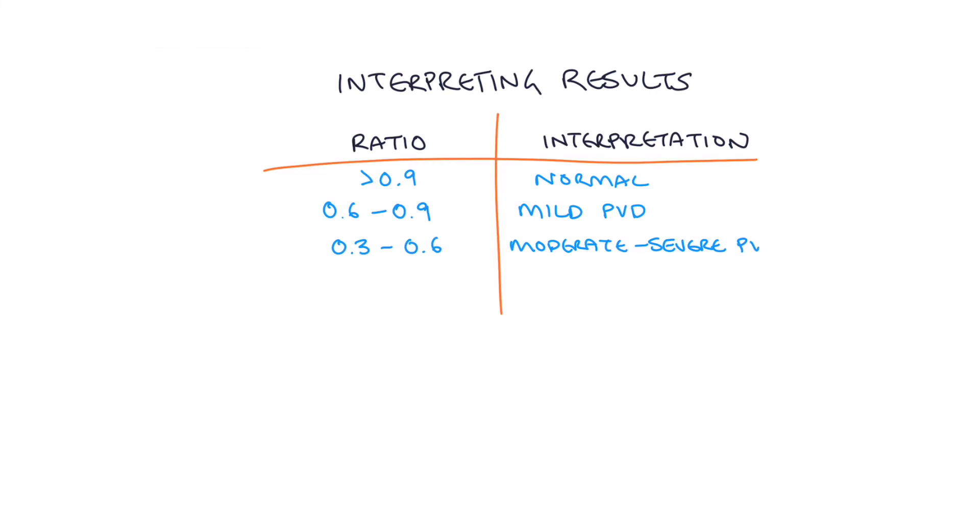to severe peripheral vascular disease, and a result less than 0.3 and you'd be very concerned because this represents severe disease or critical ischemia of the limb because so little blood is actually managing to squeeze through that narrowed artery to the peripheral tissues that you're most likely to lose toes or a foot.